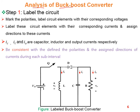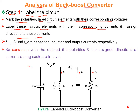Analysis of the buck-boost converter. Step number one: label the circuit diagram. Mark the polarities, label circuit elements with their corresponding voltages, and assign directions to the currents. In the circuit diagram, the inductor voltage is represented by small VL. The output current is represented by small i0, the current through the capacitor is represented by i_C, and the current through the inductor is represented by i_L.